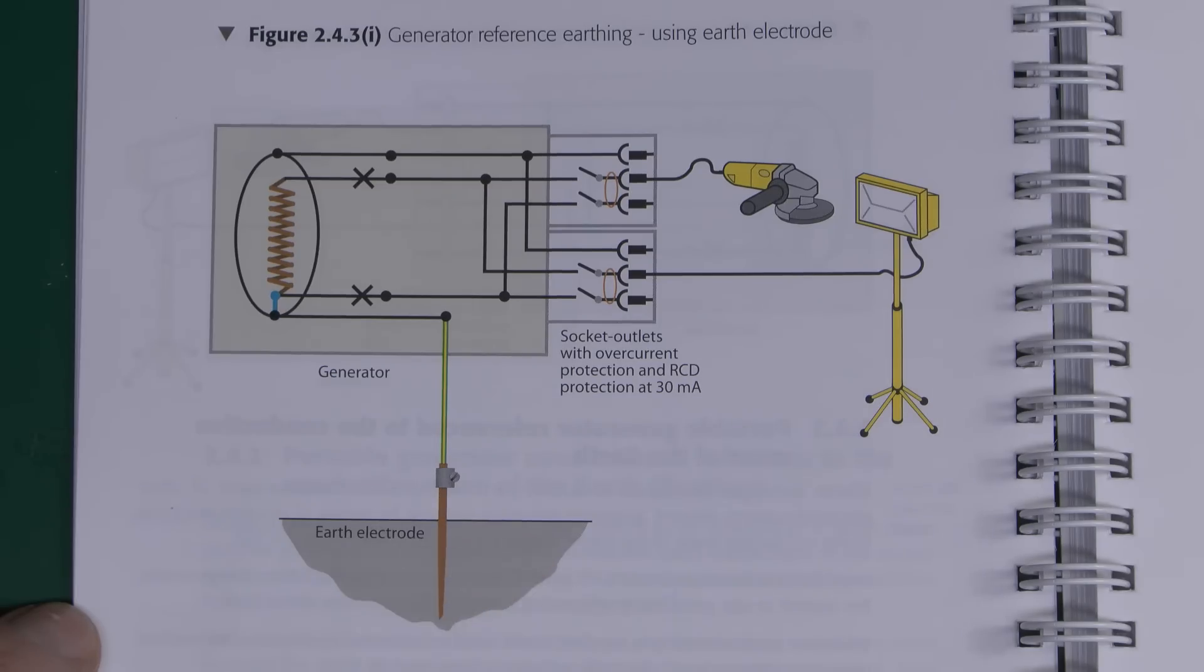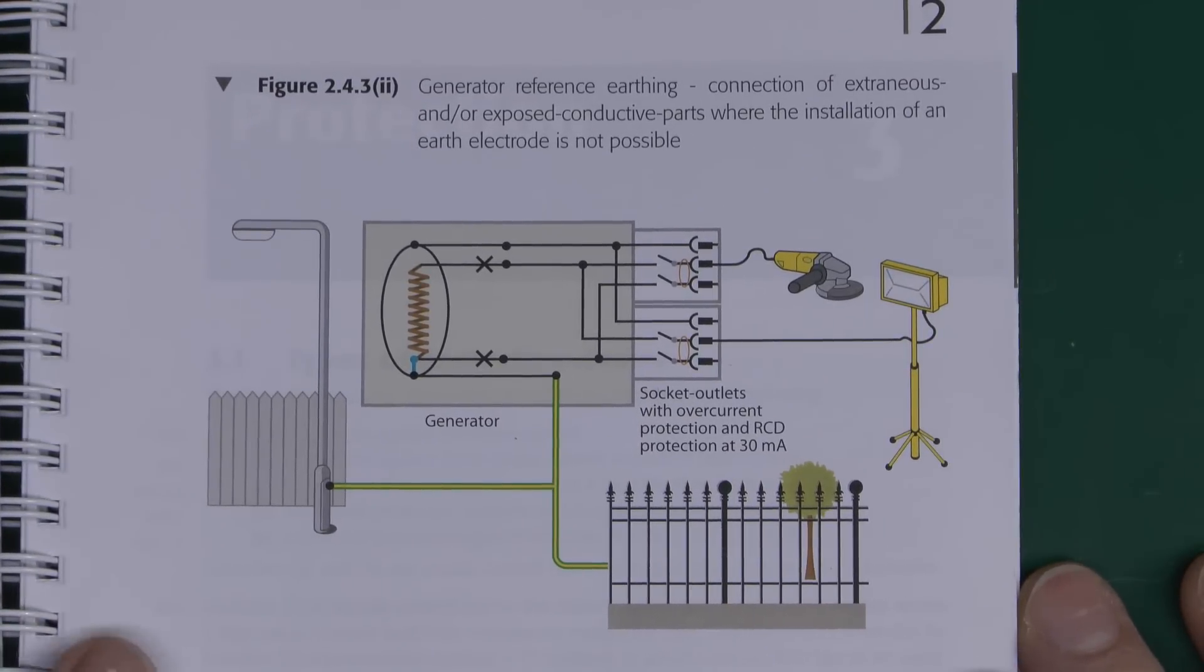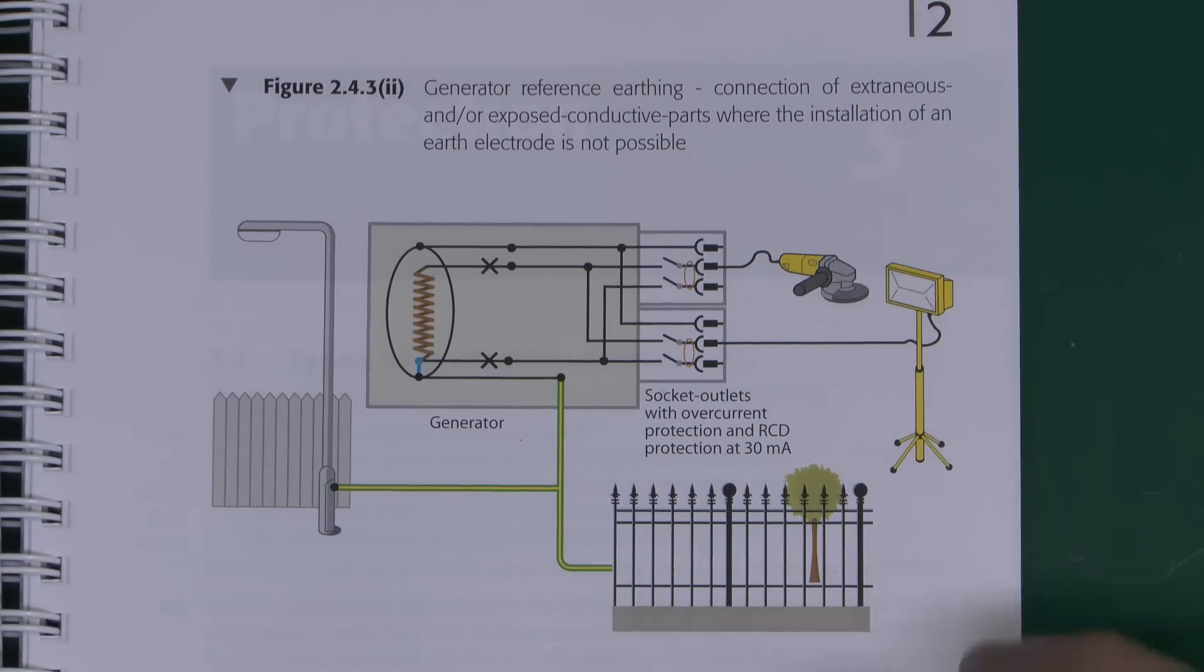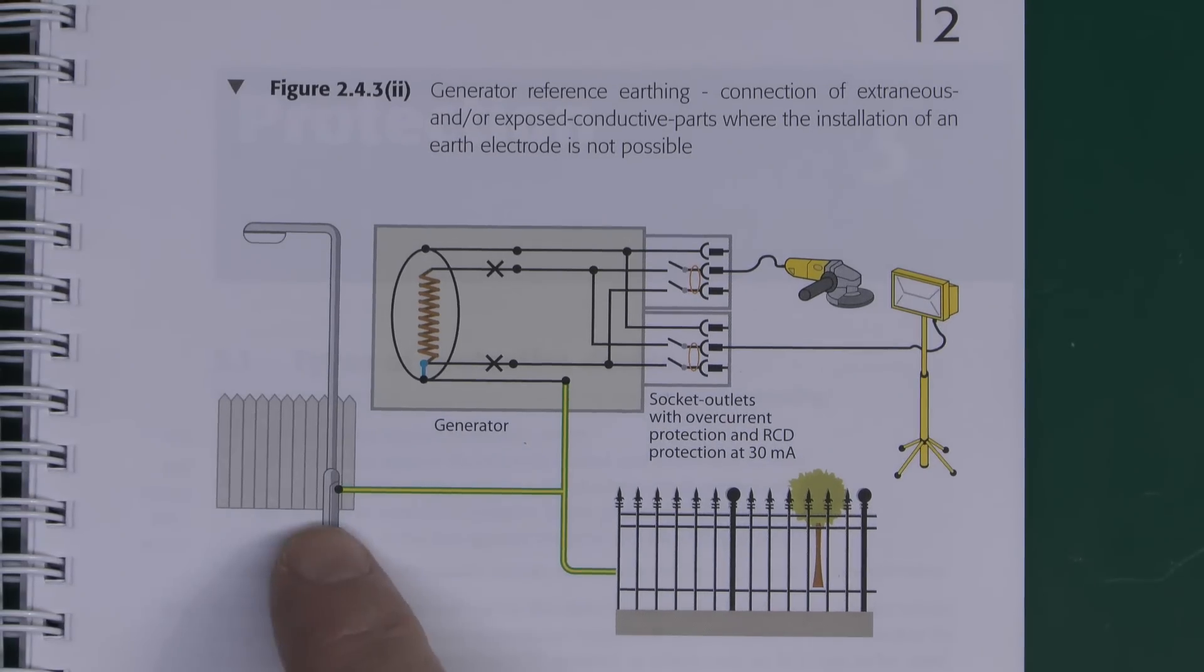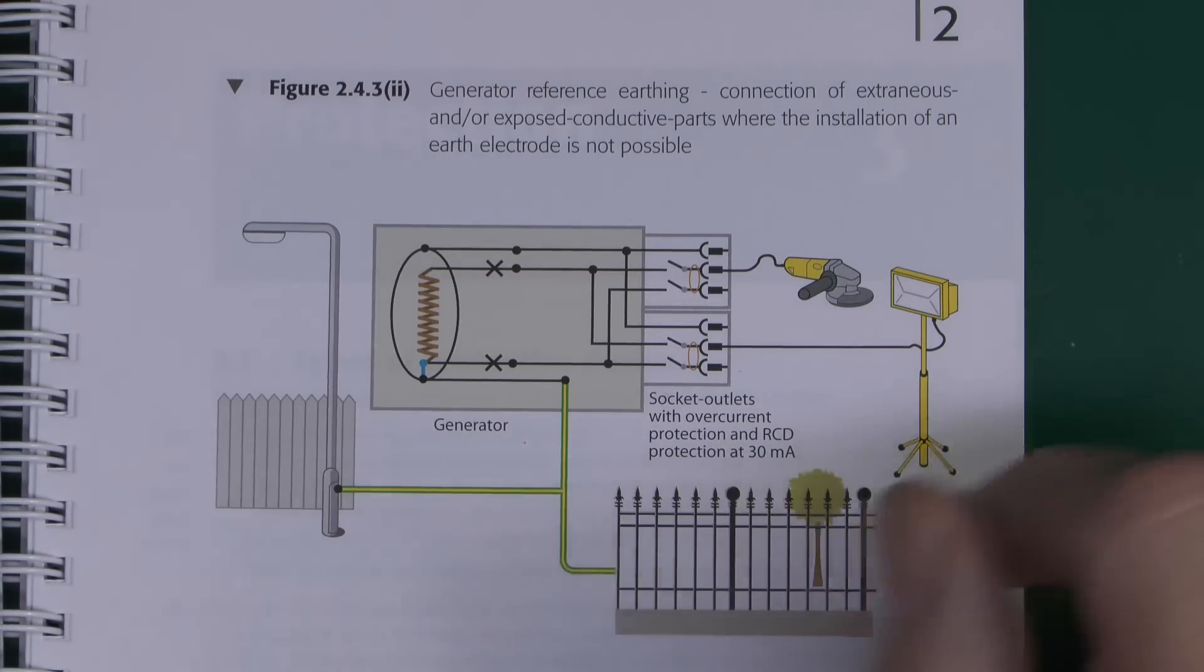Now ideally you want to put the Earth electrode in like that, so an actual electrode stuck into the Earth itself. Now there are situations where that may not be practical, and so it might be a concrete area or solid tarmac or something like that, so you can't really drive things into that. Now if we look on the next page over here, we can see that it's suggesting that you could connect it to some metallic objects such as a set of metal railings, metal railings buried in the ground and all that. It also suggests you can connect it to a lamp post, but this is a really poor choice, and really this is not something you want to be doing.